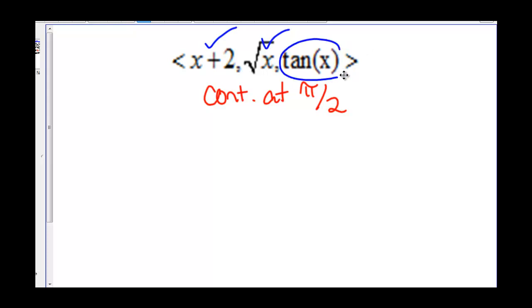but tan(π/2) has an asymptote, so it's not continuous. So this vector-valued function overall is not continuous because one of its functions is discontinuous.